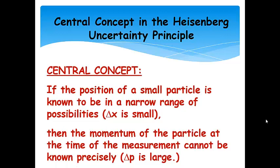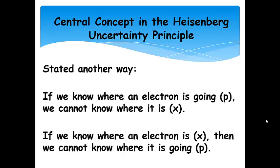Okay. So, this is the central concept in the Heisenberg Uncertainty Principle. If we know the position of a small particle really well, so we know it's in a really narrow range of possibilities, or that uncertainty in x is really small, then the momentum of the particle at the time you measure it cannot be known precisely. So, that means that the uncertainty in momentum is going to be really, really big. And the reverse is also true. If you really know the momentum, so you have a very narrow range of possibilities for the momentum, you're not going to know where in the heck that particle is.